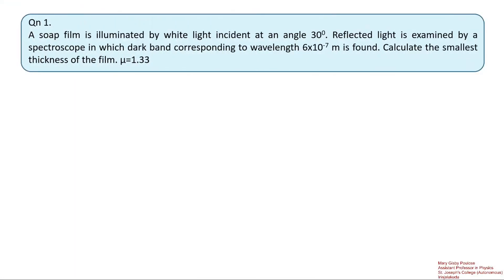The first question is: a soap film is illuminated by white light incident at an angle of 30 degrees. The reflected light is examined by a spectroscope in which a dark band corresponding to wavelength 6×10⁻⁷ meters is found. Calculate the smallest thickness of the film given mu is equal to 1.33.